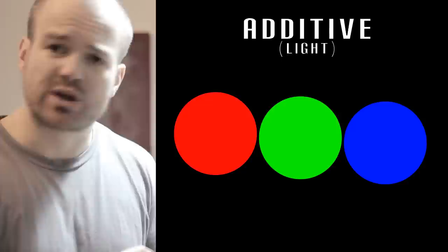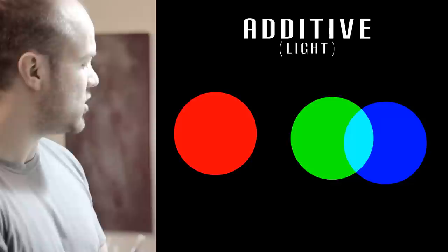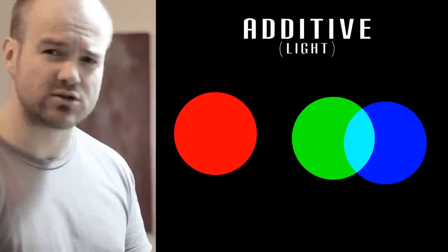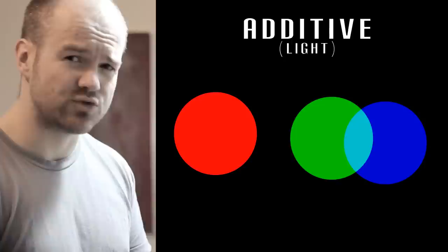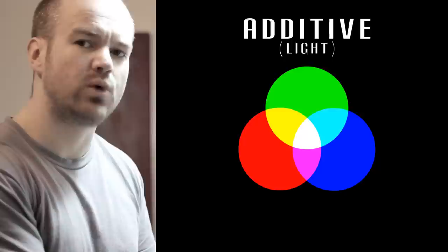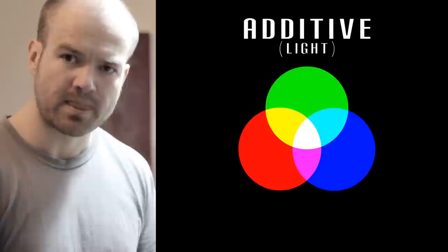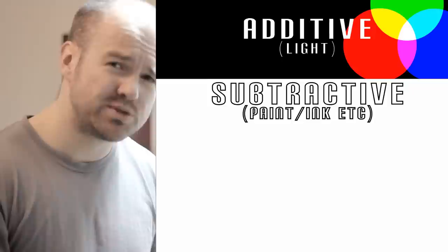With additive colour we start with complete darkness — black. When these primary light sources overlap, they start to mix to give the secondary colours. When light is added together like this, the resultant mix will always be brighter. We can view these secondaries at an equal value if we reduce the intensity of the two lights that make that secondary colour. When all the primary colour lights are mixed, we get white, which you can see in the middle of this diagram.